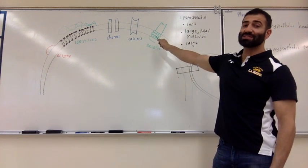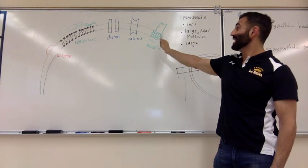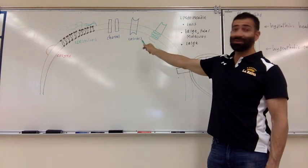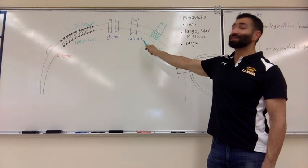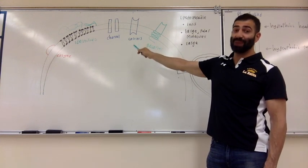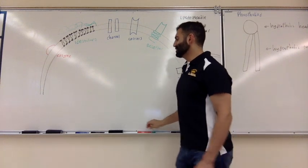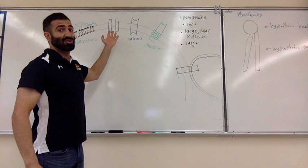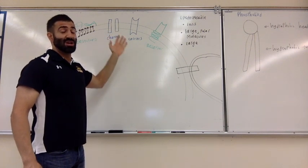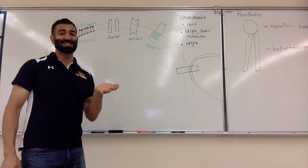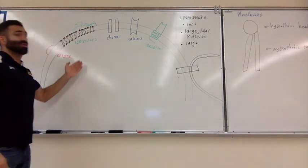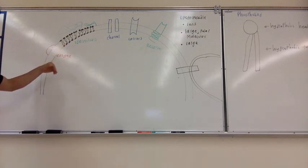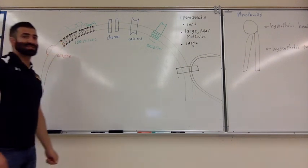We know that our cell membrane is embedded with many things such as receptors, which is how cells receive signals from other cells and modify their behavior. We also have transporters in the form of channels and carriers — carriers transport large things while channels allow small things to pass through. Channels can also be gated, meaning they can open and close based on certain stimuli. Water channels do not have gates, but sodium and potassium channels do.